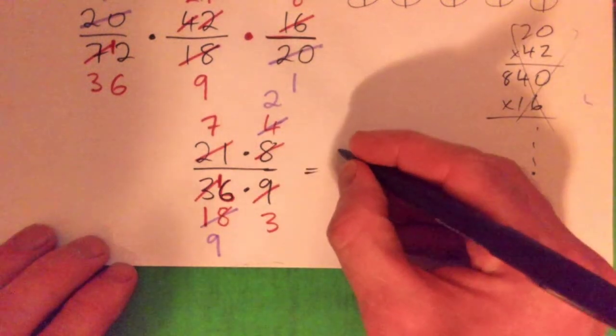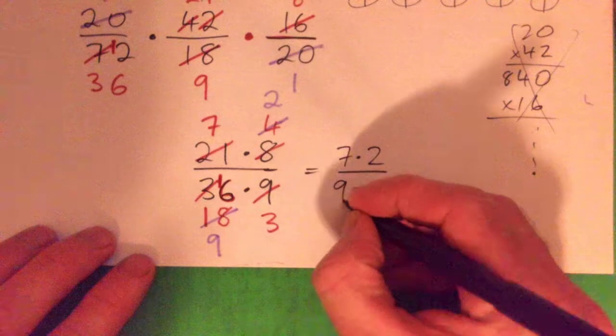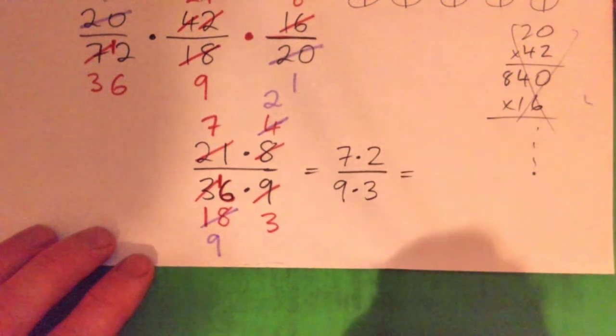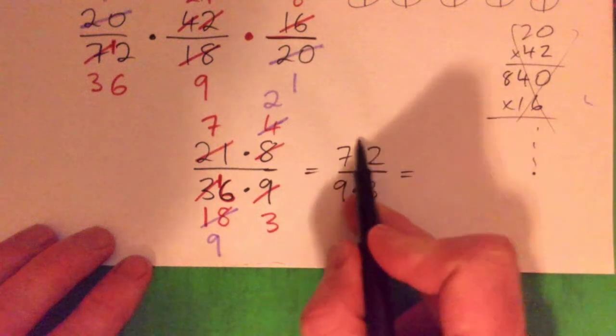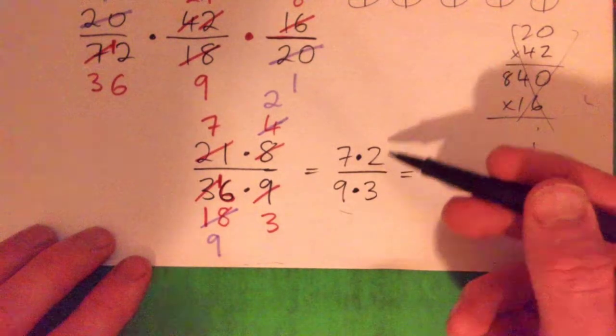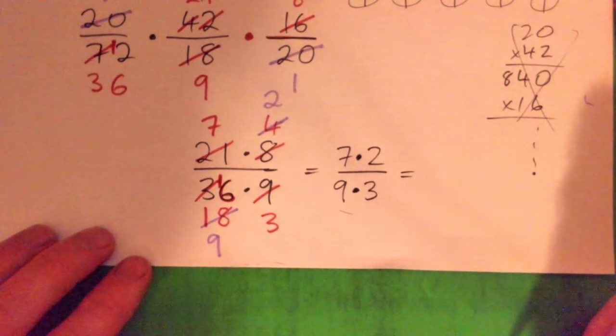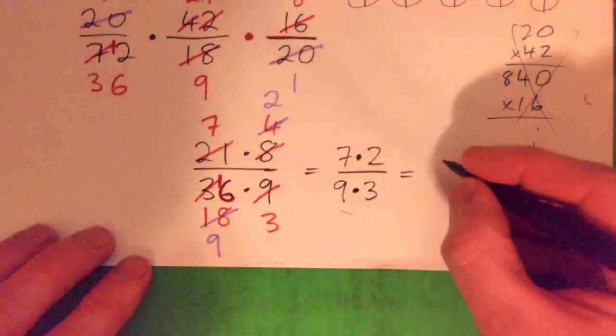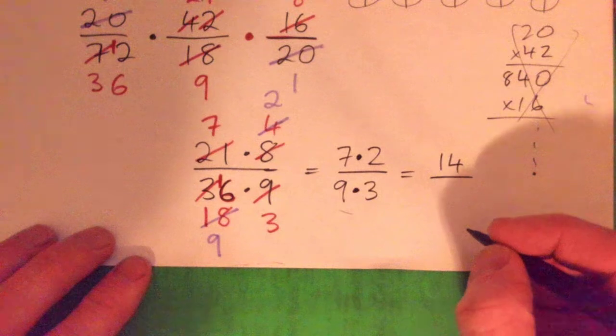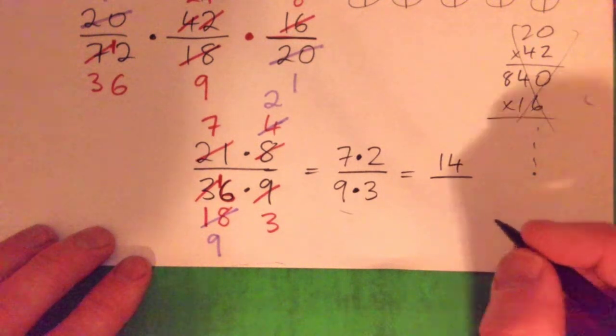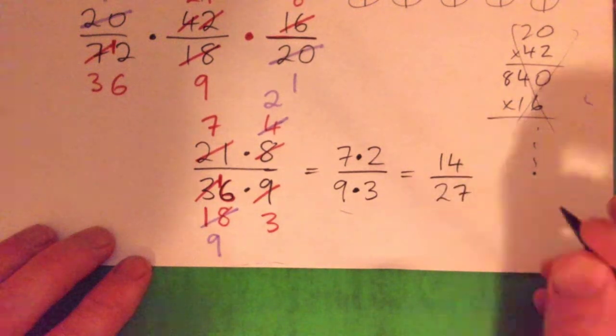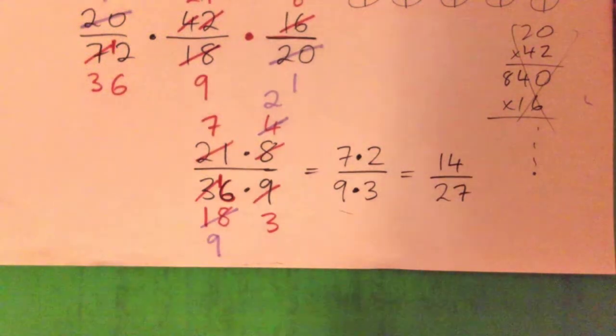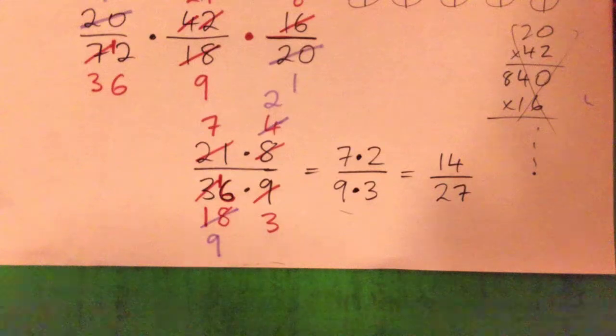Good. So, now we end up with a 7 times 2 on the top and a 9 times 3 on the bottom, right? So, is there anything else that can be cross-canceled with the top and the bottom? No. Correct. So, just multiply them. So, 14 over. Perfect. Yep.